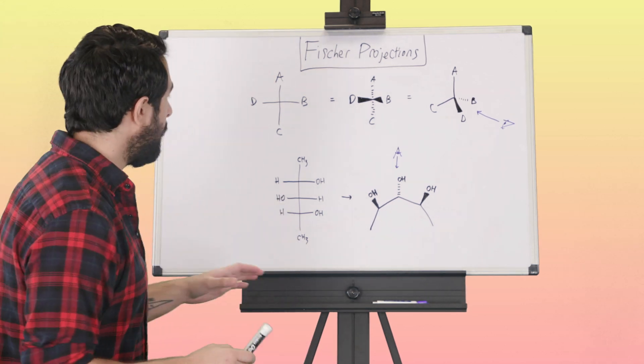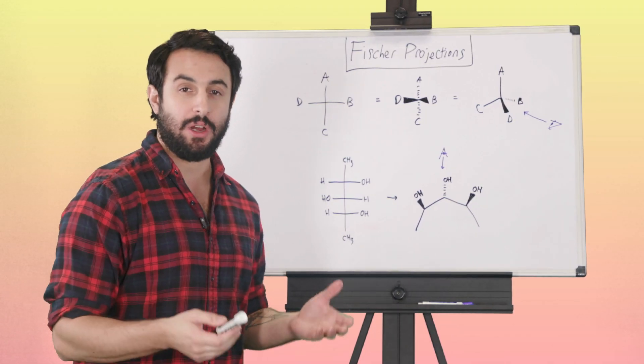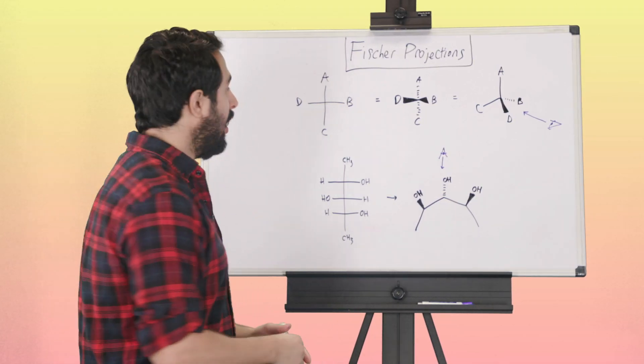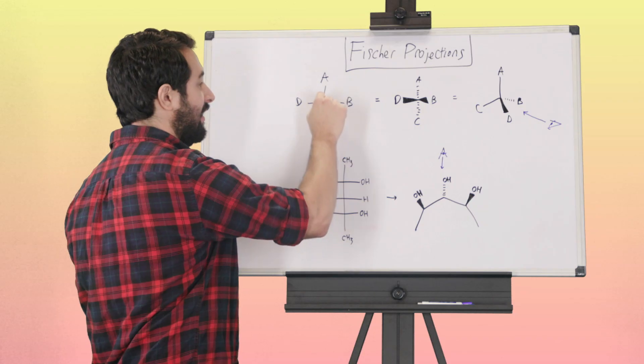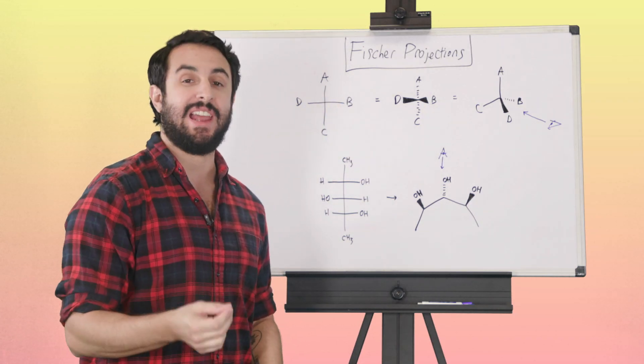When we see Fisher projections, we're not going to see those wedges and dash bonds anymore. We're going to see things flat like this, and we still understand that every vertex and endpoint is a carbon atom.